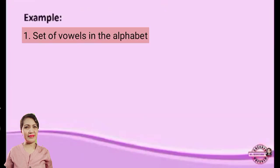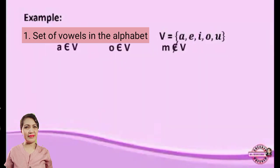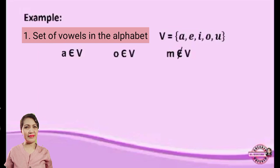Example number one: set of vowel letters. We have set V for vowel letters, and the elements are A, E, I, O, U. A is an element of V. O is an element of V. But M is not an element of V — it is not a member of the vowels.